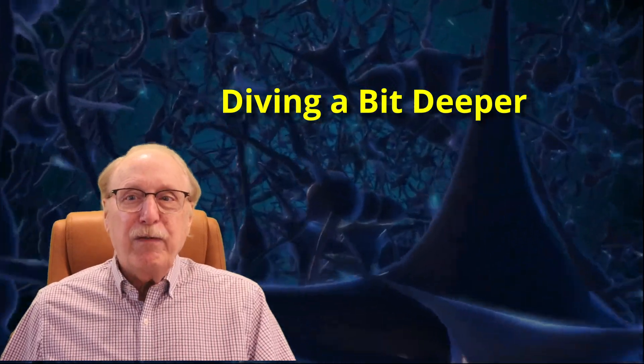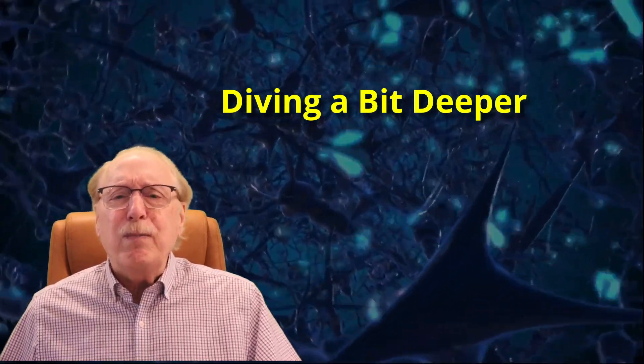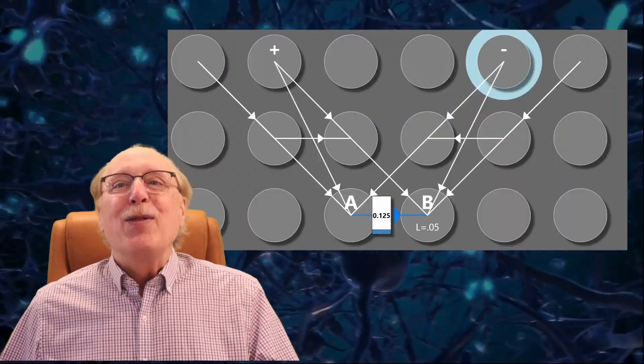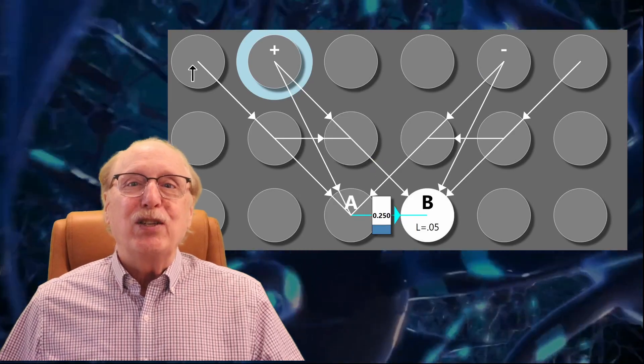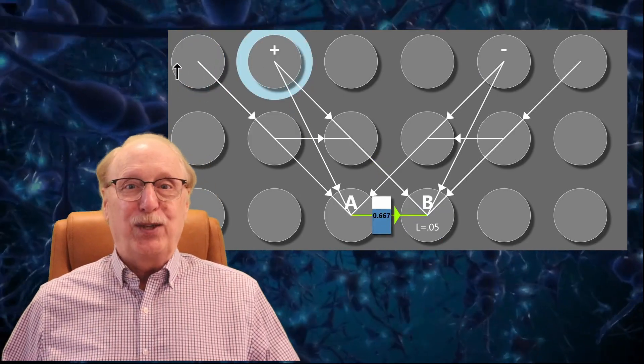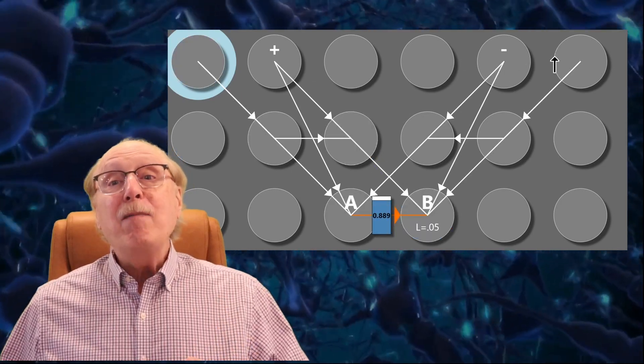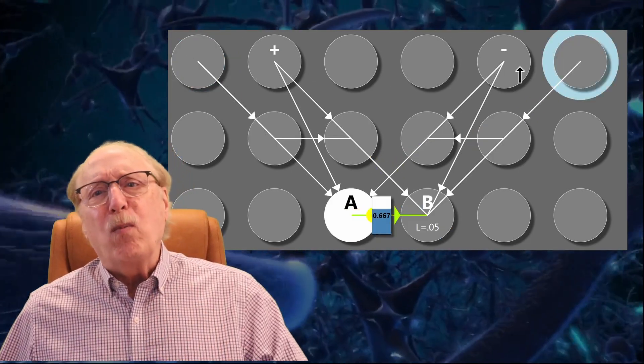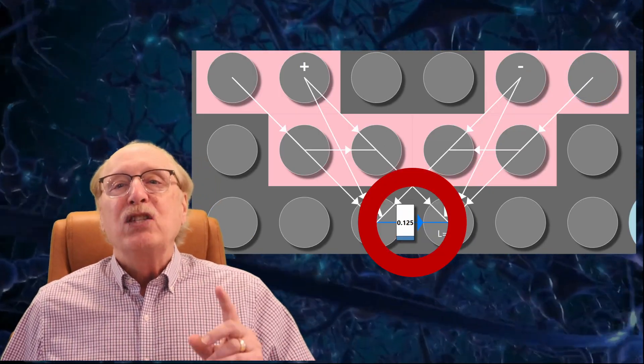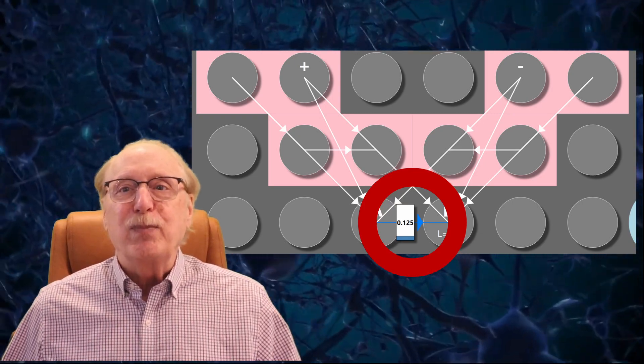But there are a few observations that this simple demonstration of Hebbian synapses brings to light. The remainder of this video will provide some details which will subsequently drive much of the logic about how your brain must work. Obviously, using 8 or more additional neurons to control a single synapse weight is implausible. So some additional process must be going on.